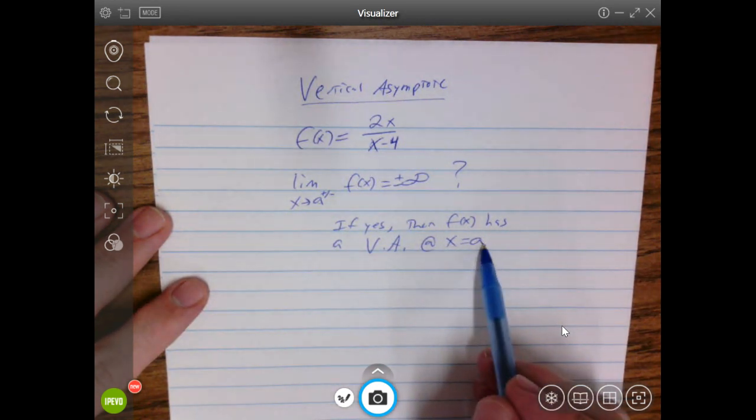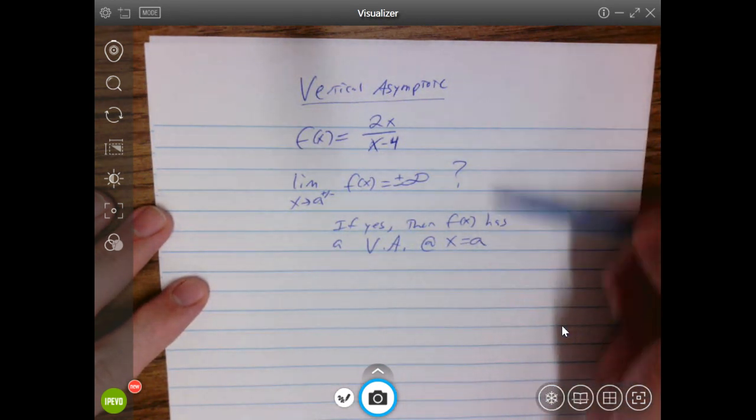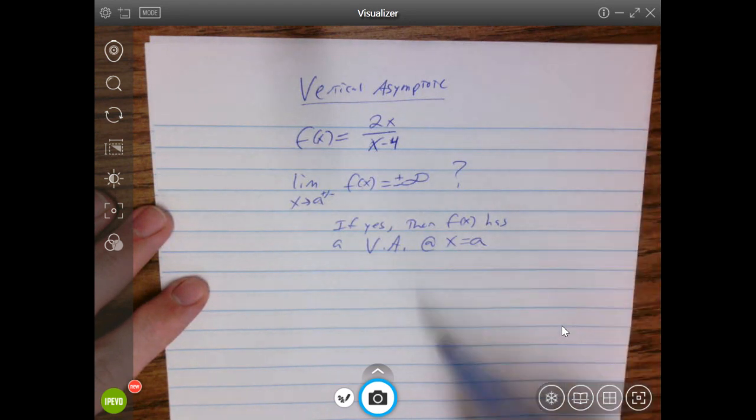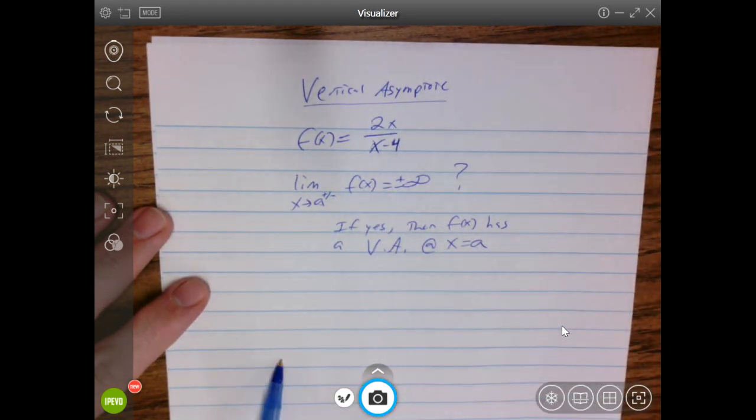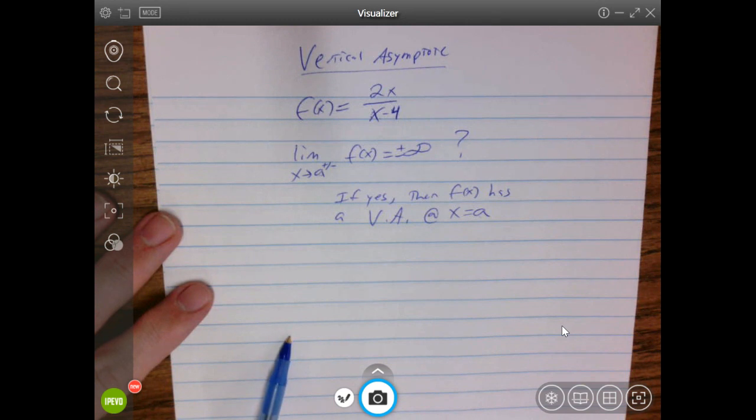That's how you would say it. x equals a is a vertical line. So if a was 2, x equals a would be the vertical line at 2. So in this case, it looks like it's going to be at 4, but let's just check it.